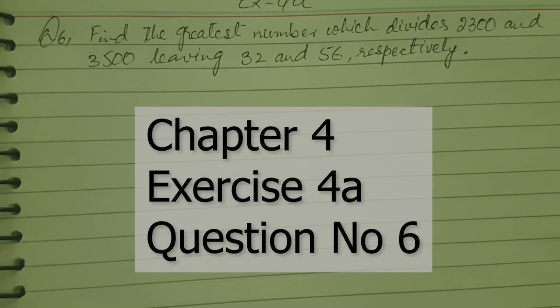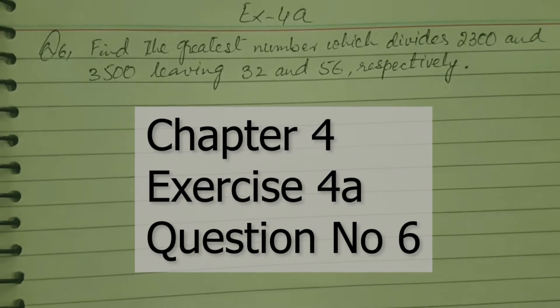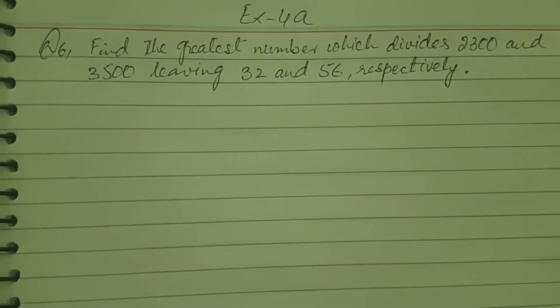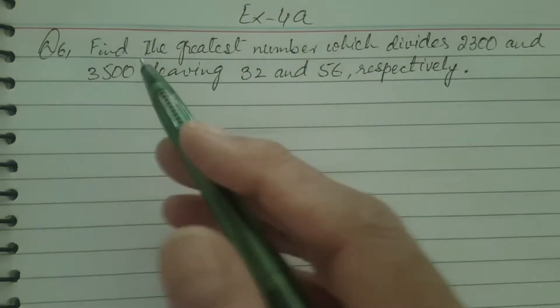Assalamu alaikum dear children. Today we will do Exercise 4A, problem sum question number 6. Find the greatest number which divides 2300 and 3500 leaving 32 and 56 as remainders respectively.